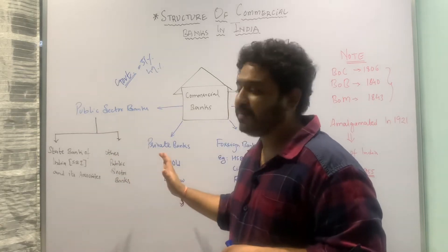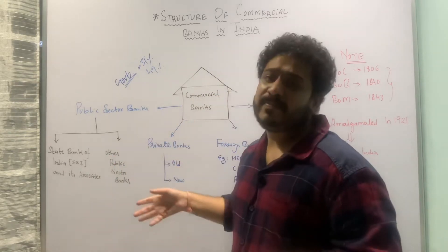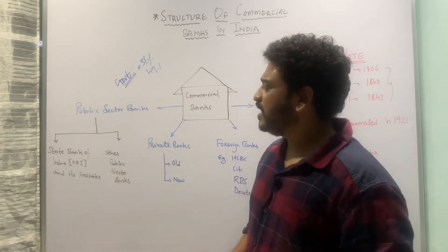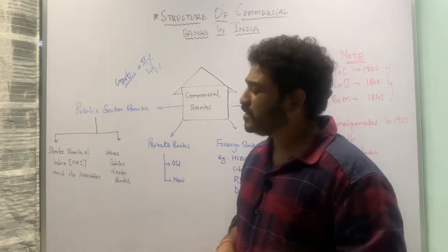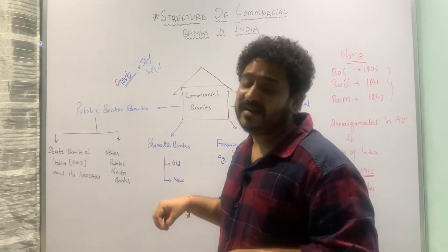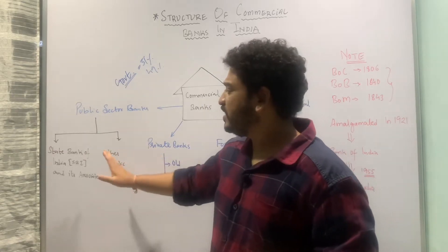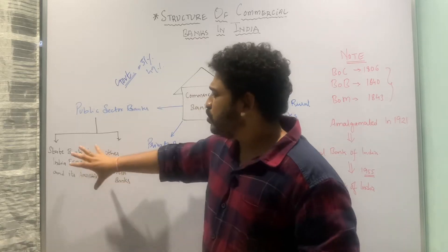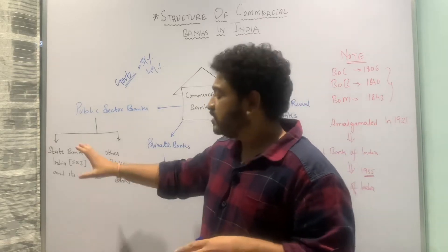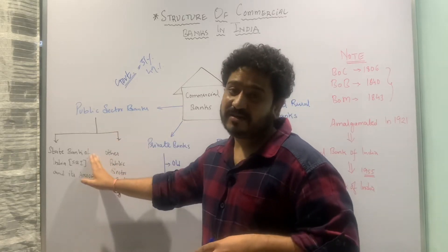Public sector banks can be understood from two distinct dimensions. The first is the State Bank of India and its associates, and the other is all the other nationalized banks in India. The State Bank of India is given special importance because it is one of the best banks in the world and ranks amongst the top 50 globally, which is why it requires greater attention and deserves detailed study.